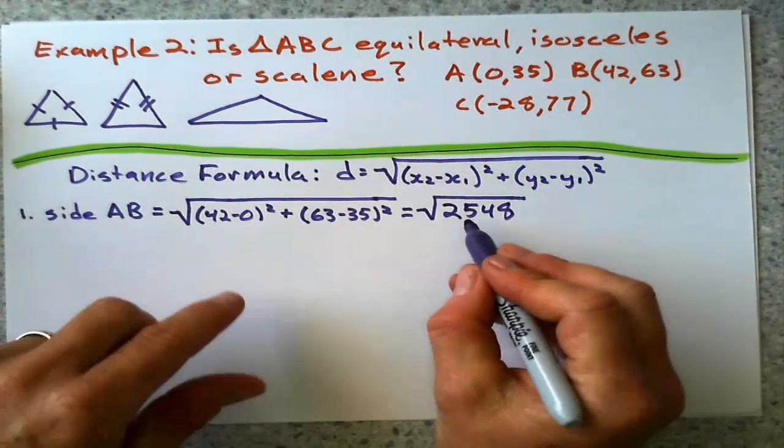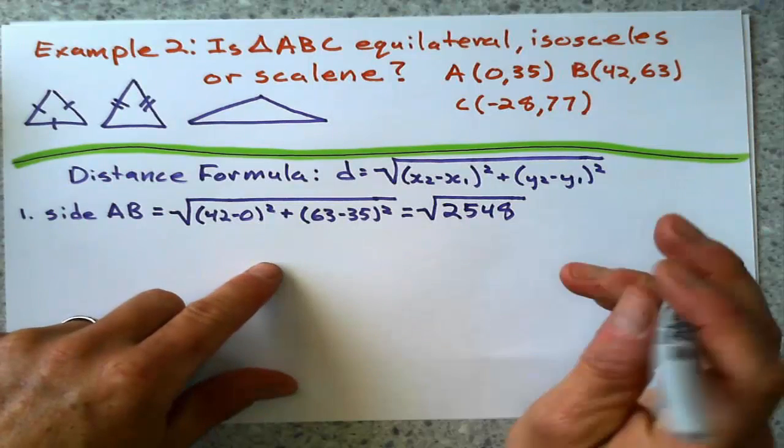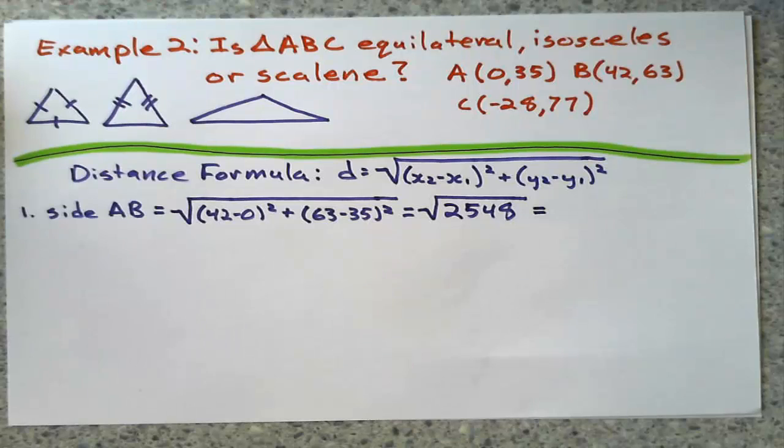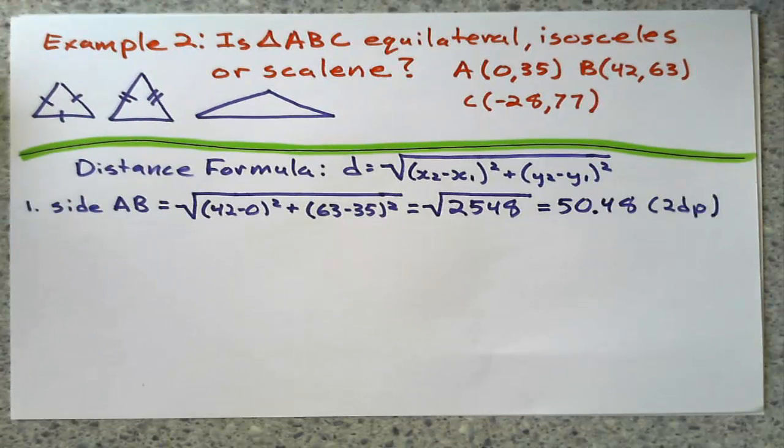That's what I got when I cleaned all that up. I got 2,548 under the square root symbol. Last step of every distance formula. So take the square root of that. It doesn't give me a whole number, so it gives me some irrational number that I've got around 50.